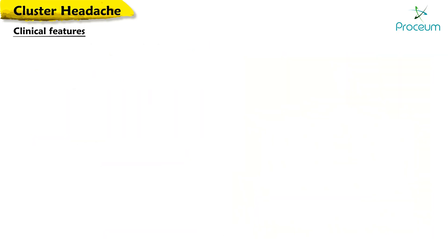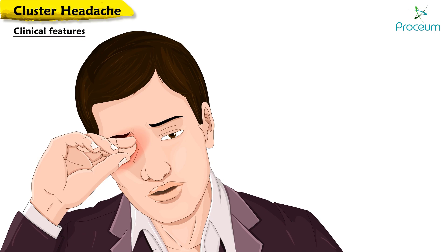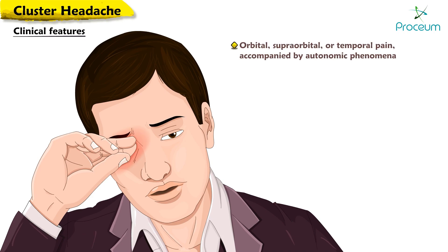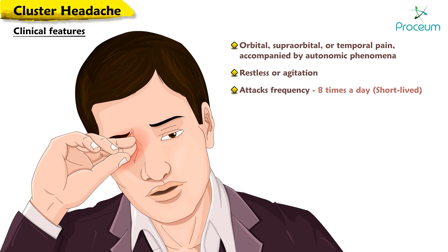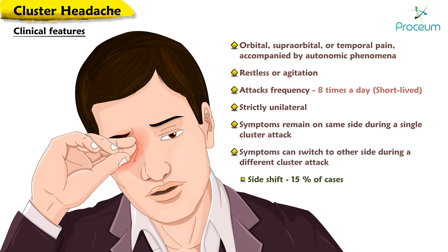Cluster headache is characterized by attacks of severe orbital, superorbital, or temporal pain accompanied by autonomic phenomena and/or restlessness or agitation. The stereotypical attacks may strike up to eight times a day and are relatively short-lived. Cluster headache is strictly unilateral and symptoms remain on the same side of the head during a single cluster attack; however, symptoms can switch to the other side during a different cluster attack — a so-called side shift.